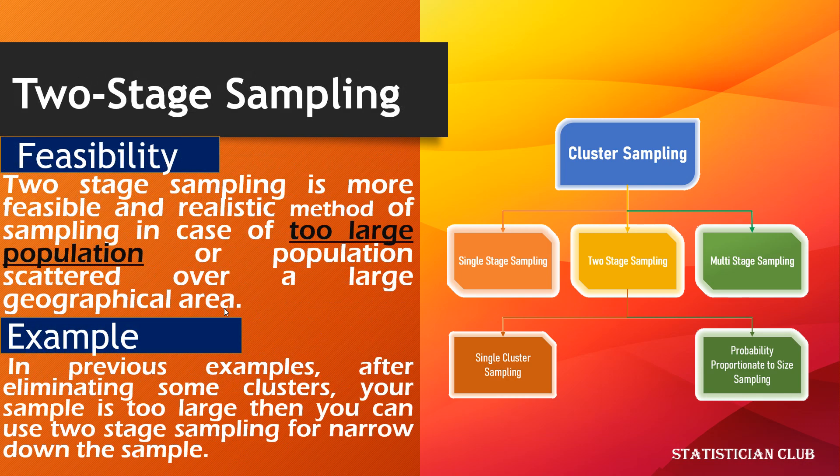Suppose you have a state and we divide this state into four geographical portions — cluster one, cluster two, cluster three, and cluster four. From these four clusters we select two clusters. If we study each and every element of these two selected clusters, then this is one-stage sampling. In two-stage sampling, from these two selected clusters you again subsample and study those subsamples. When your selected clusters are too large, it is very difficult to do one-stage sampling, so in such a situation two-stage sampling is feasible.